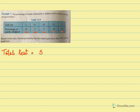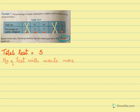He has answered a total of 5 tests. We need to find the probability of getting more than 70 marks. In the first test, more than 70? No. Second test? Yes. Third test? Yes. Fourth test? No. Fifth test? Yes. So the number of tests with marks more than 70 percent is 3.